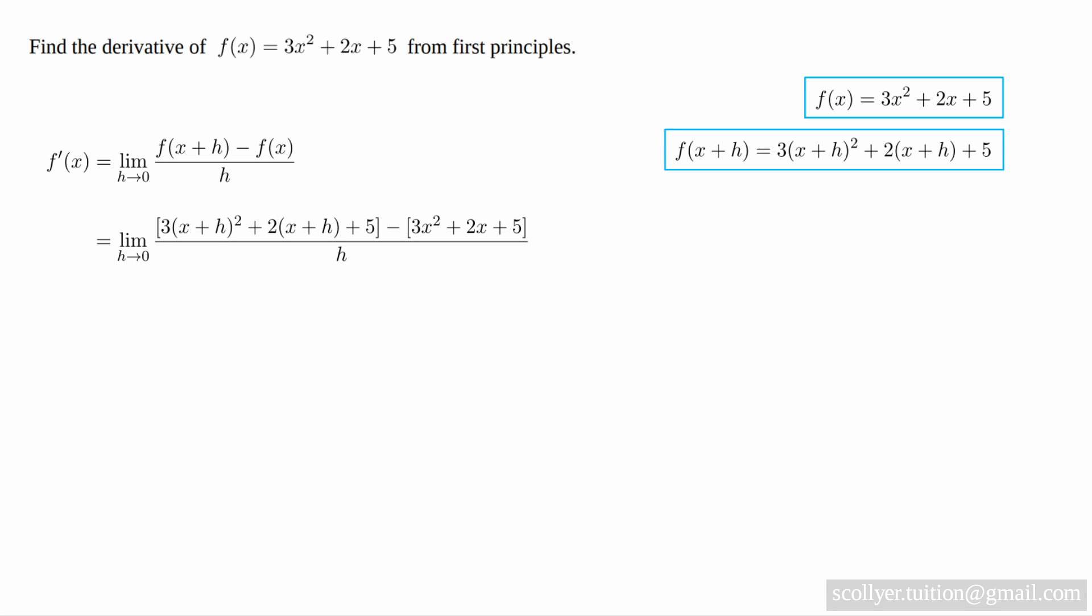And so, on substituting those values into the formula above, we obtain the limit as h tends to zero of [3(x + h)² + 2(x + h) + 5 - (3x² + 2x + 5)] / h.